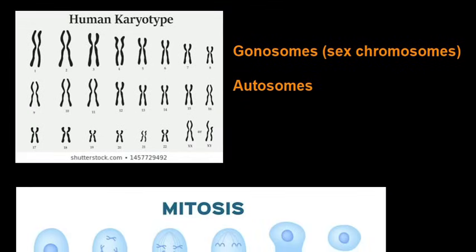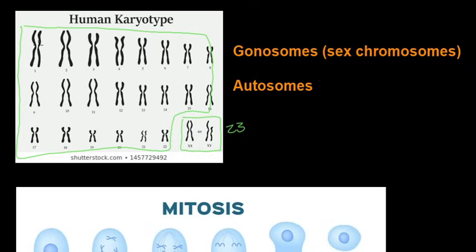Looking at a human karyotype, you've got the gonosomes which are the sex chromosomes, so pair number 23, and then the autosomes are 1 through to 22. This is a diploid amount because there's a pair of chromosomes, one from the mom and one from the dad. This human karyotype will show you either it's a female XX or it could be a male XY.